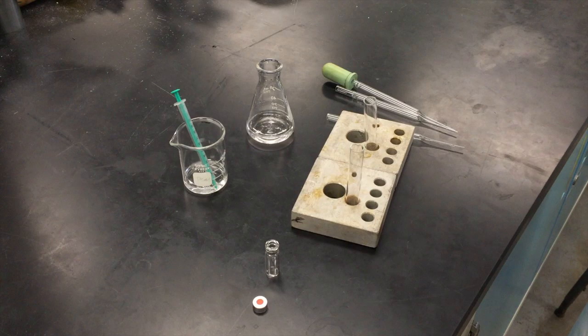Prepare for this by rinsing two small test tubes with one milliliter of diethyl ether. Then syringe one milliliter of diethyl ether into each of the two rinse test tubes.